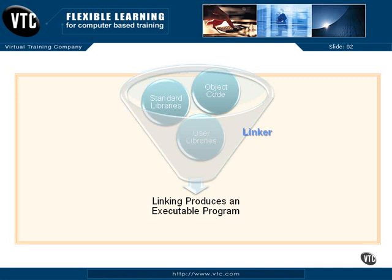I want you to understand the difference between source code — which is what you can easily read, written in a form of English — object code, which is the output of the compiler, and then executable code, which is a combination of object code and other standard libraries, and maybe even some user libraries, so that we can get an executable program to run.